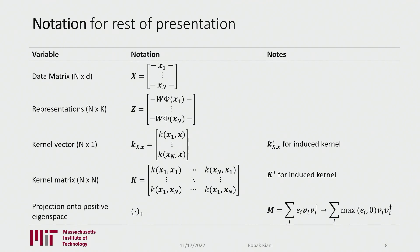Before we jump into more details, let me go through some notation. Throughout, X is our data matrix containing all inputs. These result in representations denoted by Z. In the output we have a kernel matrix, and we put a star on that — K-star — to indicate we're using the induced kernel, or the output after self-supervised learning training. And one note: if you see a plus as a subscript on a matrix, that's just projecting onto the positive eigenspace.